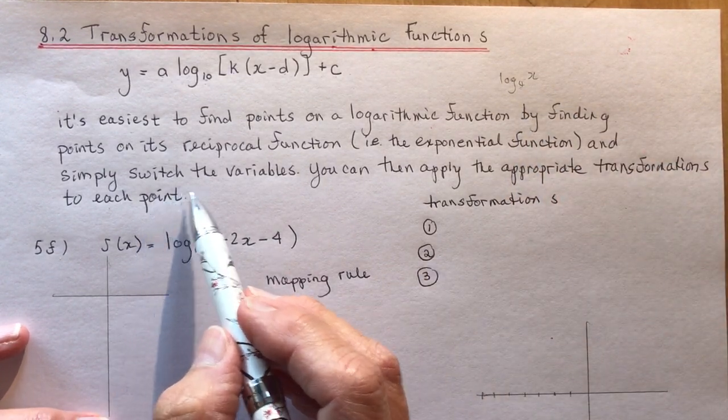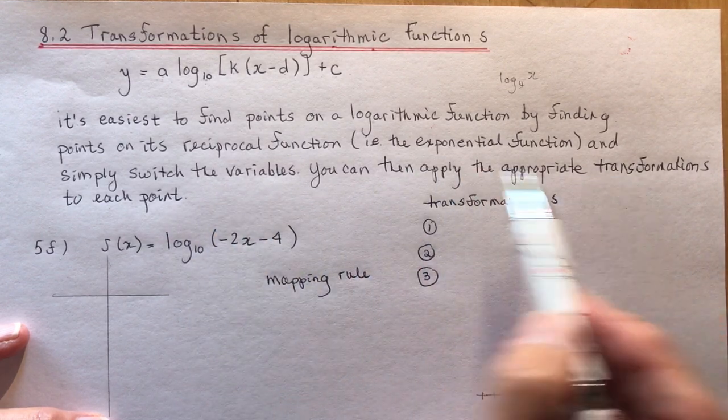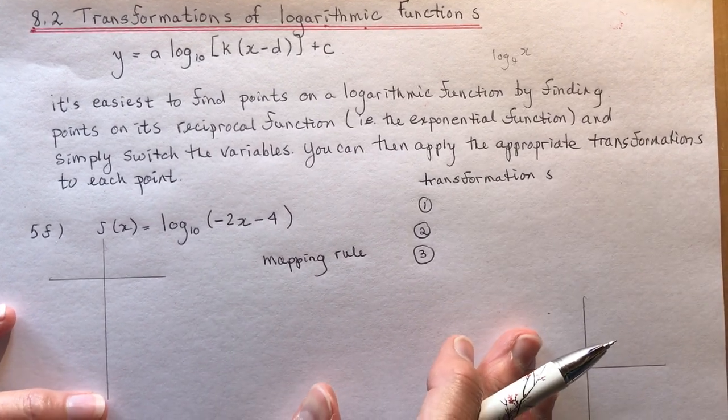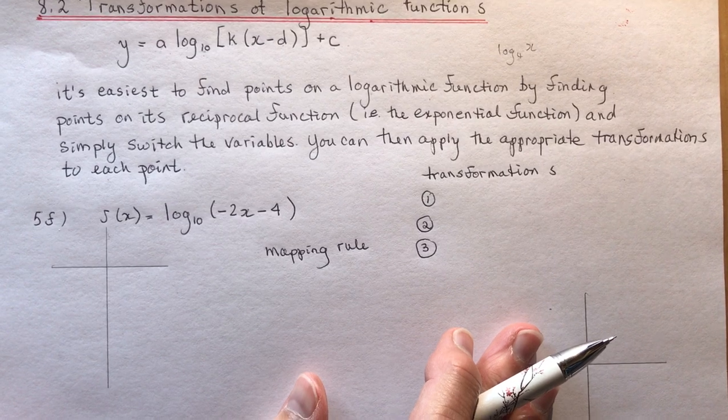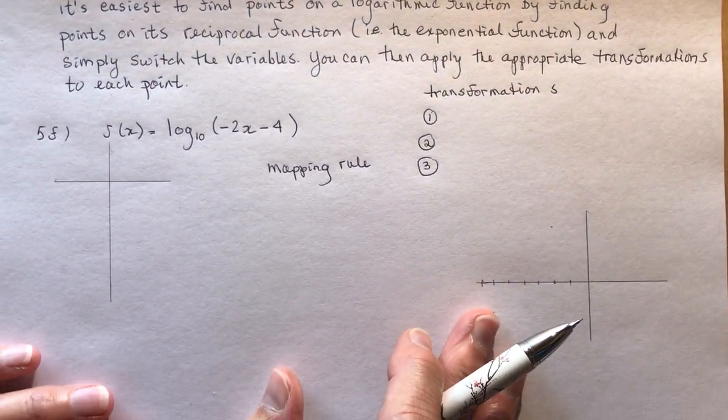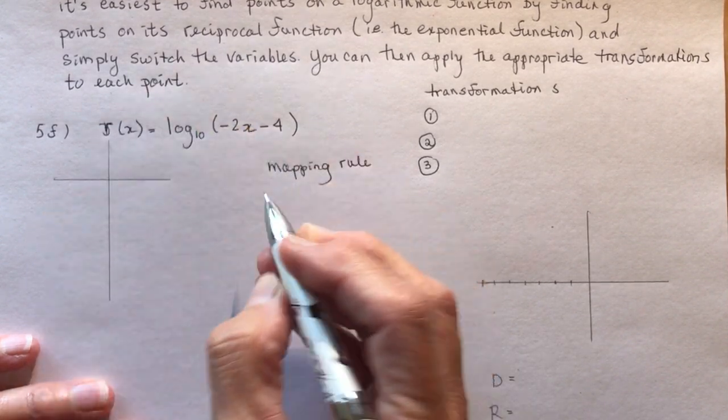And simply switch the variables. You can then apply the appropriate transformations to each point. So I'm going to do an example from your homework for you. It's not anything really mind-blowing here, but it needs to be covered so that you understand how transformations work. This is supposed to be an R here.